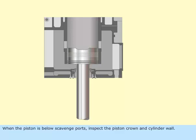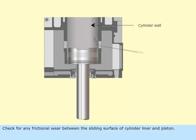When the piston is below the scavenge ports, inspect the piston crown and cylinder wall. Check for any frictional wear between the sliding surface of the cylinder liner and piston.